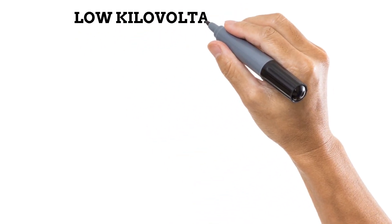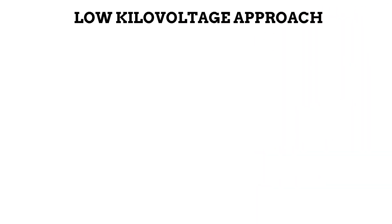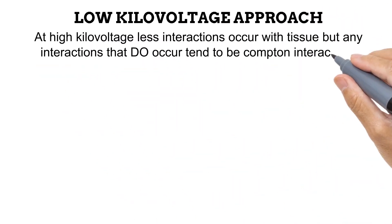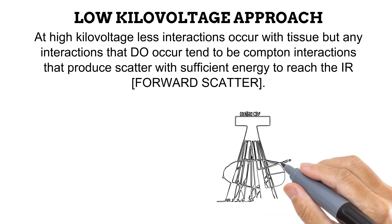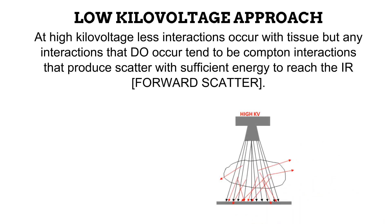High kilovoltage photons are likely to pass through the body tissue easily because of their high energy. Thus, at high kilovoltage, less interactions occur between photons and tissues. Most of the photons simply pass through the tissue without interacting. However, any interactions that do occur at high kilovoltage are more likely to be Compton interactions than photoelectric absorption. And because the kilovoltage is high, the scattered photons usually have sufficient energy to make it to the image receptor and place unwanted densities on the image.